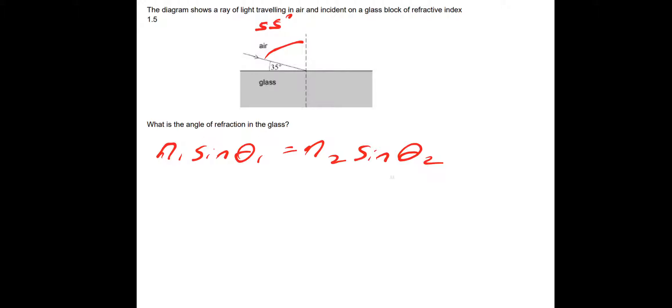We've got the angle of refraction in the glass, so we're looking for theta 2. So that would be theta 2 is equal to inverse sine of N1 sine theta 1 divided by N2.